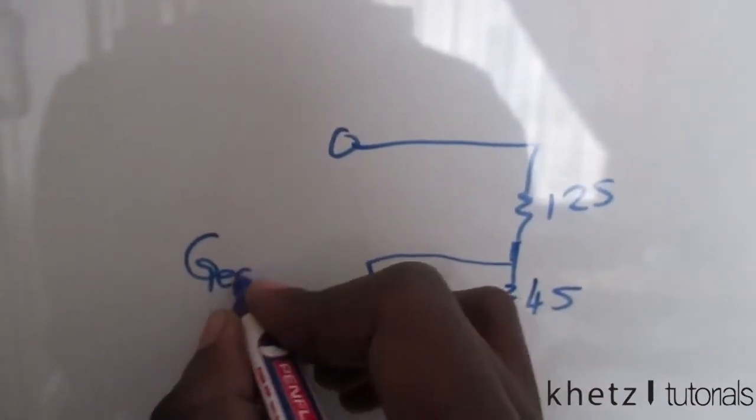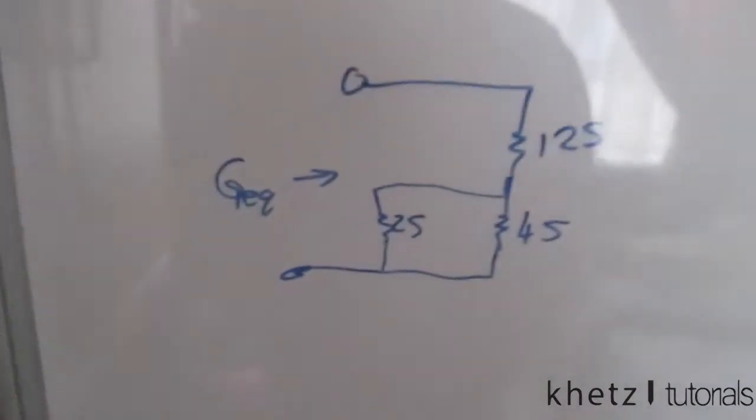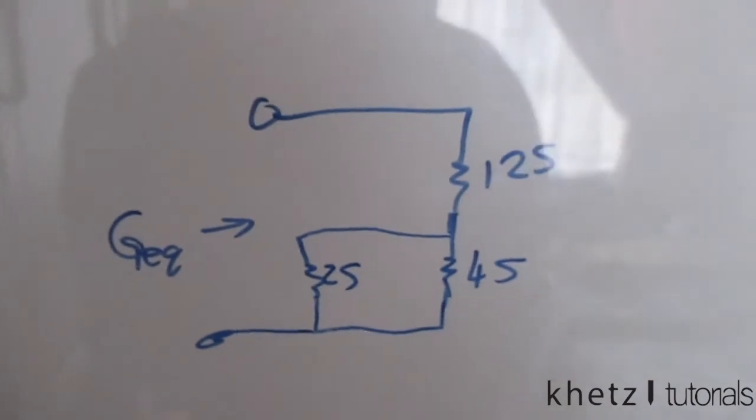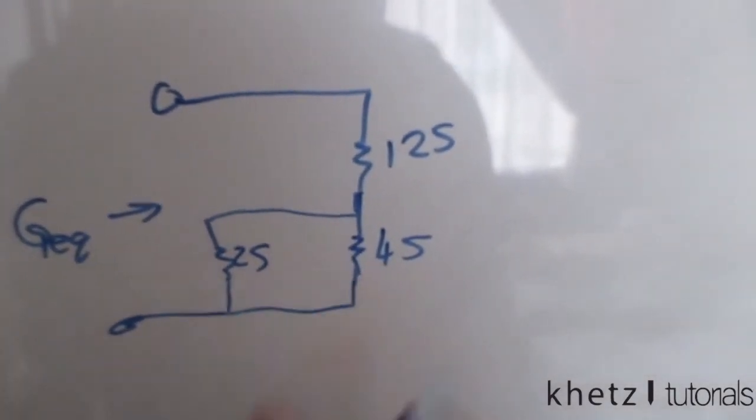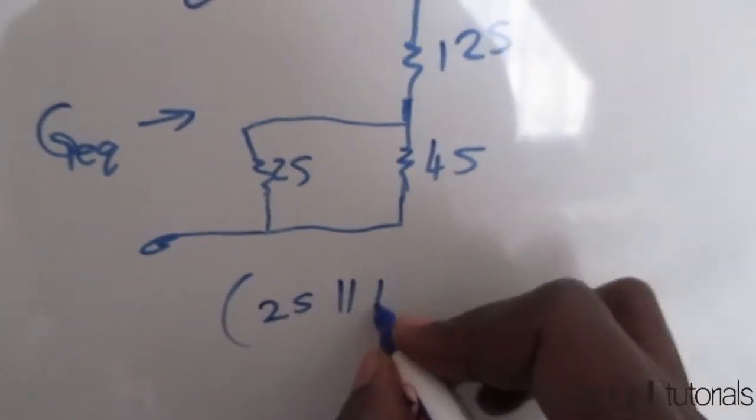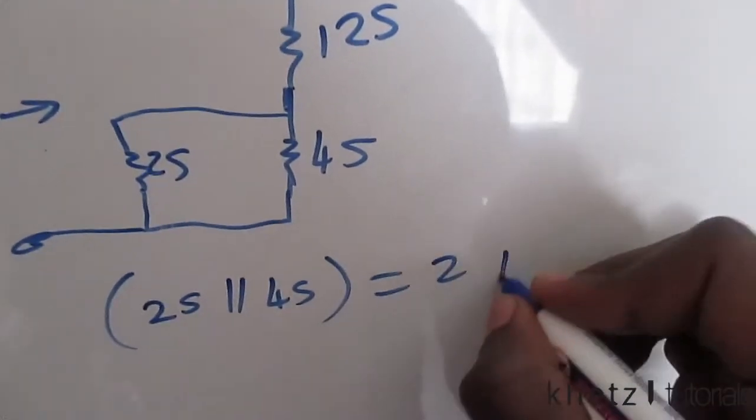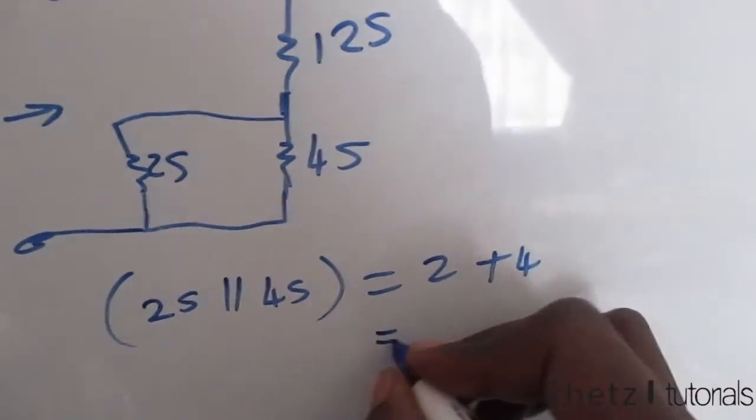So we're looking for G equivalent. So what we have now is two Siemens in parallel with two Siemens in parallel with four Siemens. So what we do is simply add four plus two, which is six Siemens.